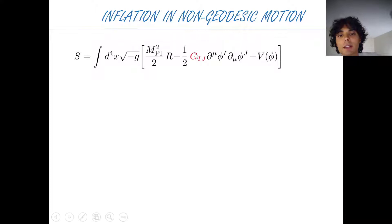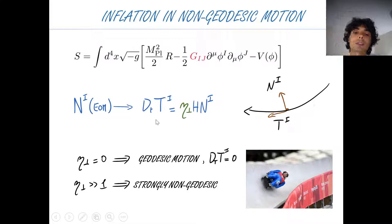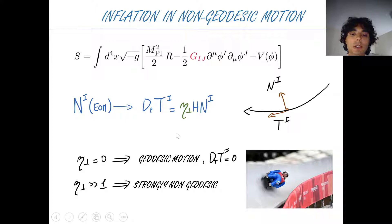This is the generic action in a multi-field scenario, where G_ij is called the metric on field space, coupling the kinetic term to a potential V. You can project the equation of motion along the direction orthogonal to the background trajectory. The unit vector tangent to the background trajectory satisfies an equation involving the covariant derivative with respect to G_ij. By introducing the parameter eta_perp, this equation tells you that if eta_perp equals zero, the inflaton moves along geodesics of field space.